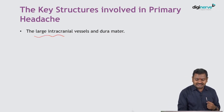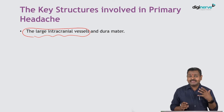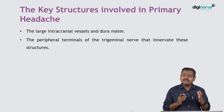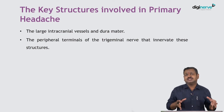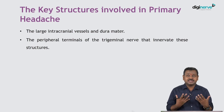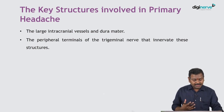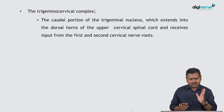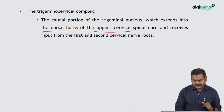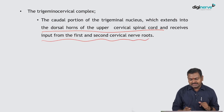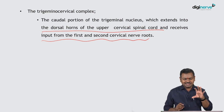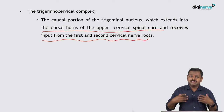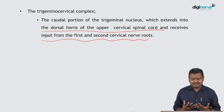The peripheral terminals of the trigeminal nerve are very important — almost all primary headaches involve the trigeminothalamic nerve system, which supplies various parts of the face. The trigeminocervical complex is the caudal portion of the trigeminal nerve that extends into the dorsal horn of the upper cervical spinal cord, receiving input from the first and second cervical nerve roots. Signals then travel through the quintothalamic tract and are finally perceived in the thalamus.